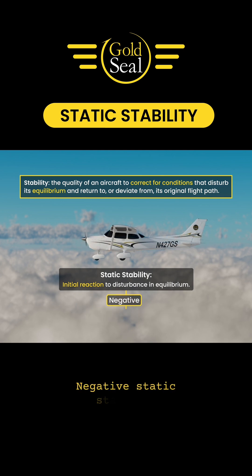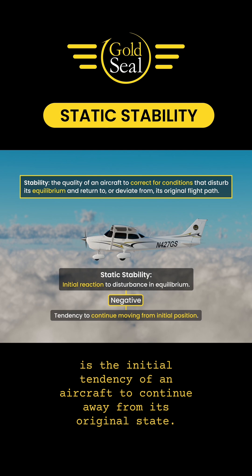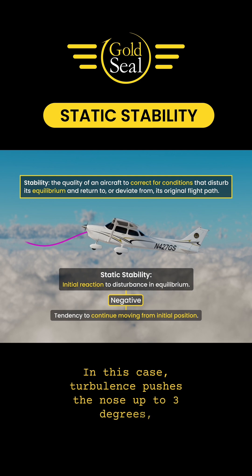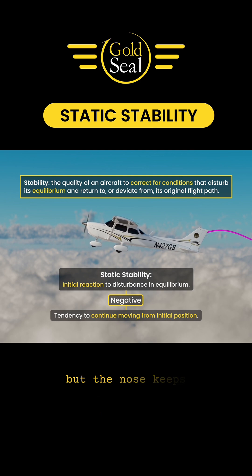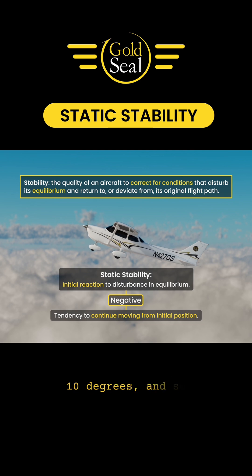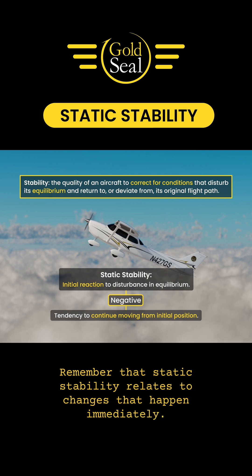Negative static stability is the initial tendency of an aircraft to continue away from its original state. In this case, turbulence pushes the nose up to 3 degrees, but the nose keeps going up to 5 degrees, 10 degrees, and so on. Remember that static stability relates to changes that happen immediately.